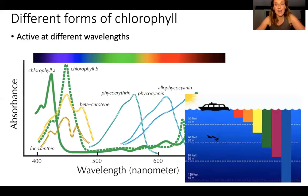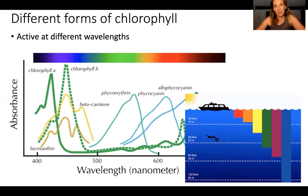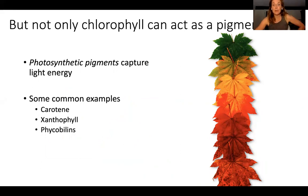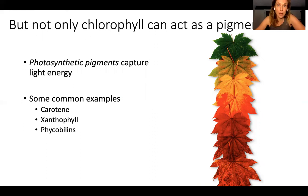These pigments are active at different wavelengths, which is really important because light attenuates in the water column. If you're living in the water, depending on where you live, you receive a different wavelength of light. Different organisms have different photo-reactive chemicals based on where they live — that's key to how life evolved on earth. Not only chlorophyll can act as a pigment. There are accessory pigments like carotene, xanthophyll, and phycobilins. When leaves change color in the fall, the chlorophyll breaks down and reveals all the other photosynthetic pigments that have been there the whole time, just masked by the chlorophyll.